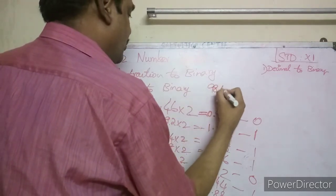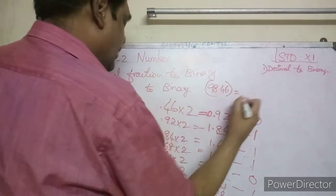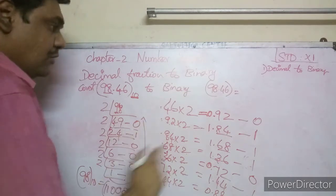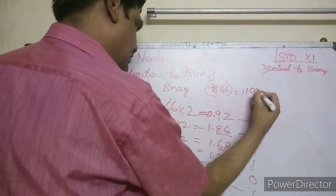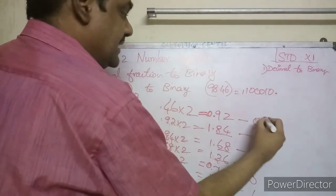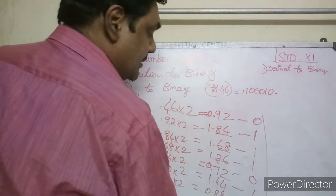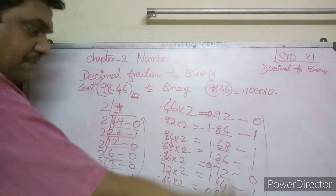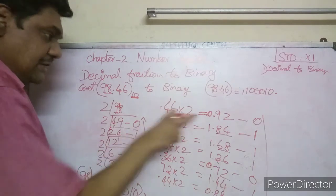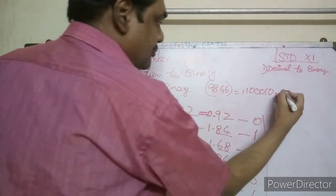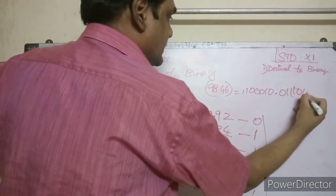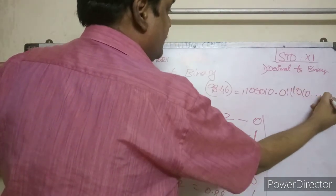So 98.46 base 10 is approximately equal to 1100010.0111010... base 2. The fractional part continues as a repeating pattern with dots, meaning it is a non-terminating binary fraction.